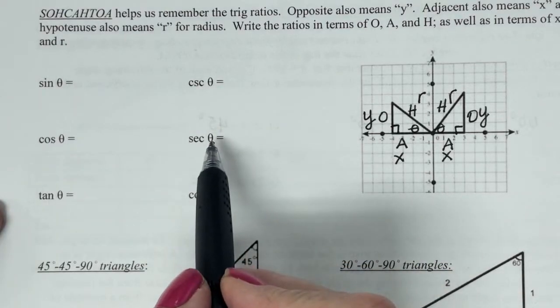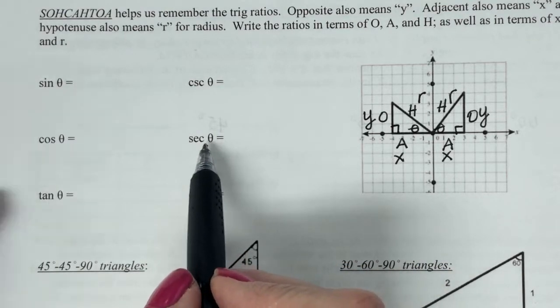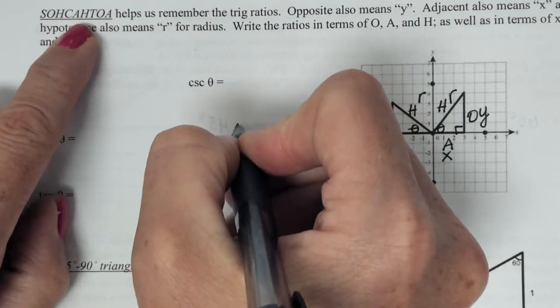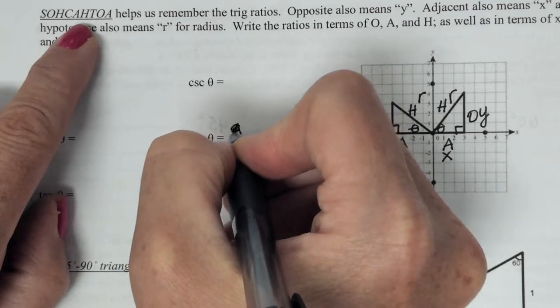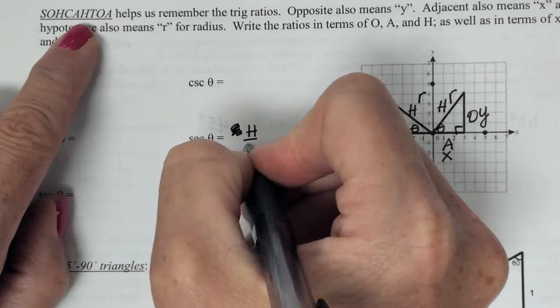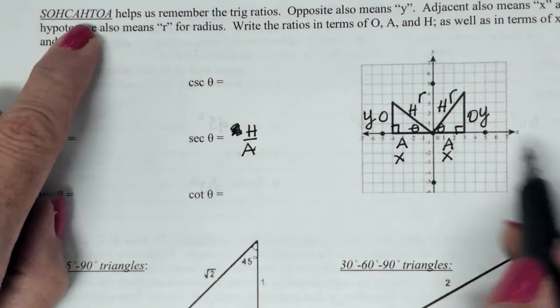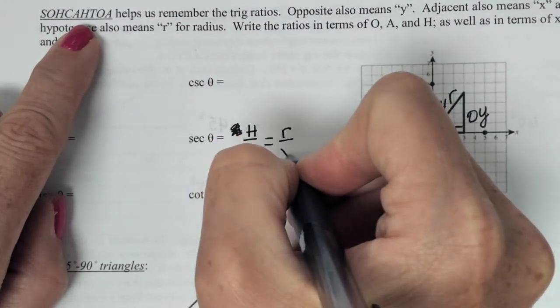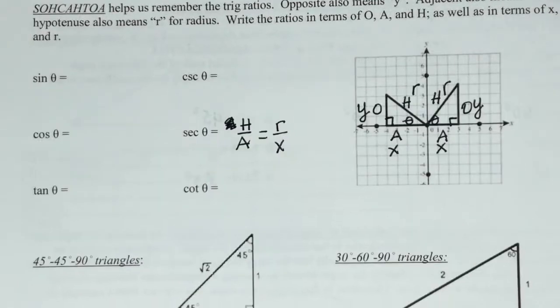Let's do this one. This is the reciprocal of cosine. So if I look at cosine, cosine is adjacent over hypotenuse. Don't write that down. So this is going to be hypotenuse over adjacent. So what's the same thing as hypotenuse over adjacent? R over x. And you guys will go and fill in the rest.